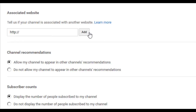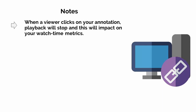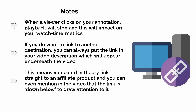Once the verification is complete, the status here will go from Pending to Success, and you can then use an annotation to take your visitors to anywhere on your URL. A few notes: first, when a viewer clicks on your annotation, playback will stop and this will impact your watch time metrics. Second, if you do want to link to another destination, you can always put the link in your video description, which will appear underneath the video. This means you could, in theory, link straight to an affiliate product, and you can even mention in the video that the link is down below to draw attention to it. There are tons of options here.